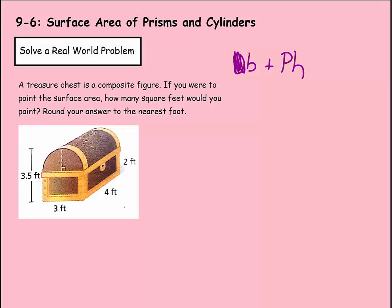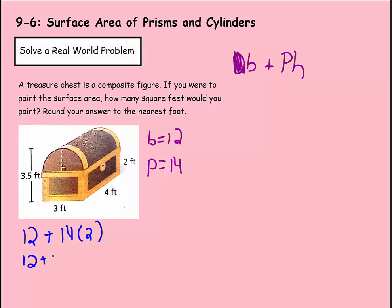Finding the surface area of the prism: the area of the base is 4 times 3, so B equals 12. The perimeter is 3 times 2 which is 6, plus 4 times 2 which is 8, so P equals 14. Plugging in: 12 plus 14 times 2. That gives us 12 plus 28, which equals 40. So the prism equals 40.